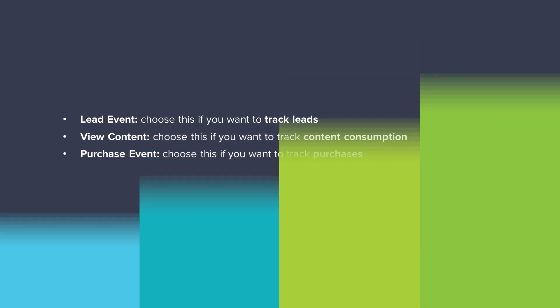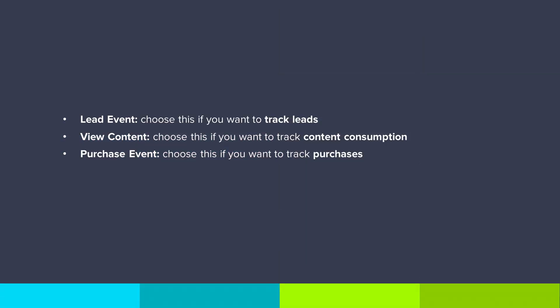The main events you should focus on are the Lead Event, View Content Event, and the Purchase Event. Lead Event is the option you choose if you're offering a lead magnet and looking to generate leads. View Content is the event you use if you're specifically trying to get people to view the great content you've produced. And Purchase Event fires when people purchase what you have — for example, if you're an e-commerce store.